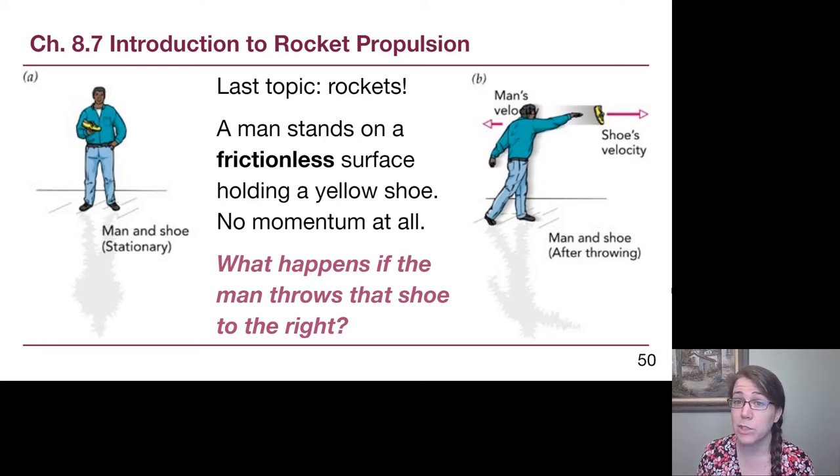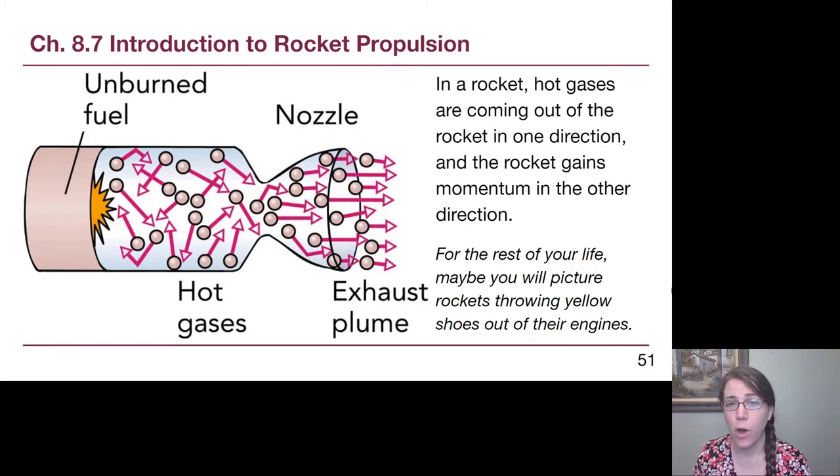Rockets are actually not that much different than that core idea. We can think of all of that rocket fuel as being a whole bunch of yellow shoes being thrown out the back of the rocket. It's a whole bunch of different atoms of the gas being heated up in the engines that is actively being thrown in one direction, sent out the exhaust pipe, so that the rocket can move in the opposite direction. Maybe next time you see a rocket, you'll just pretend there's a whole bunch of yellow shoes coming out the bottom.